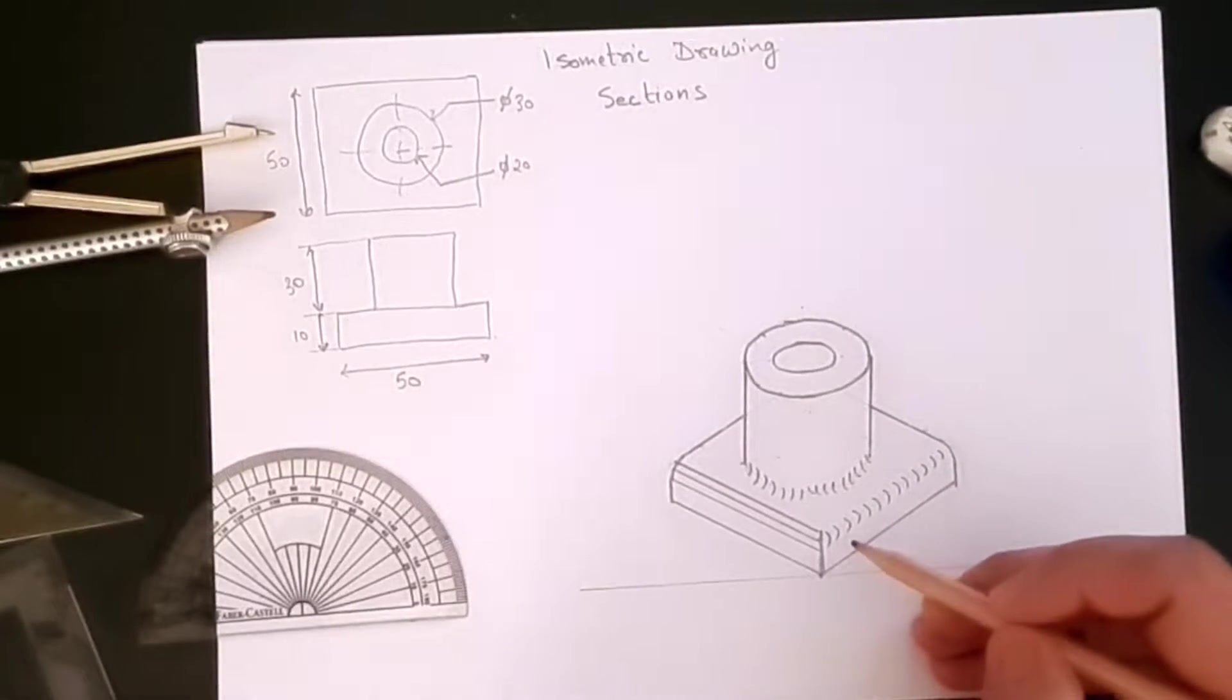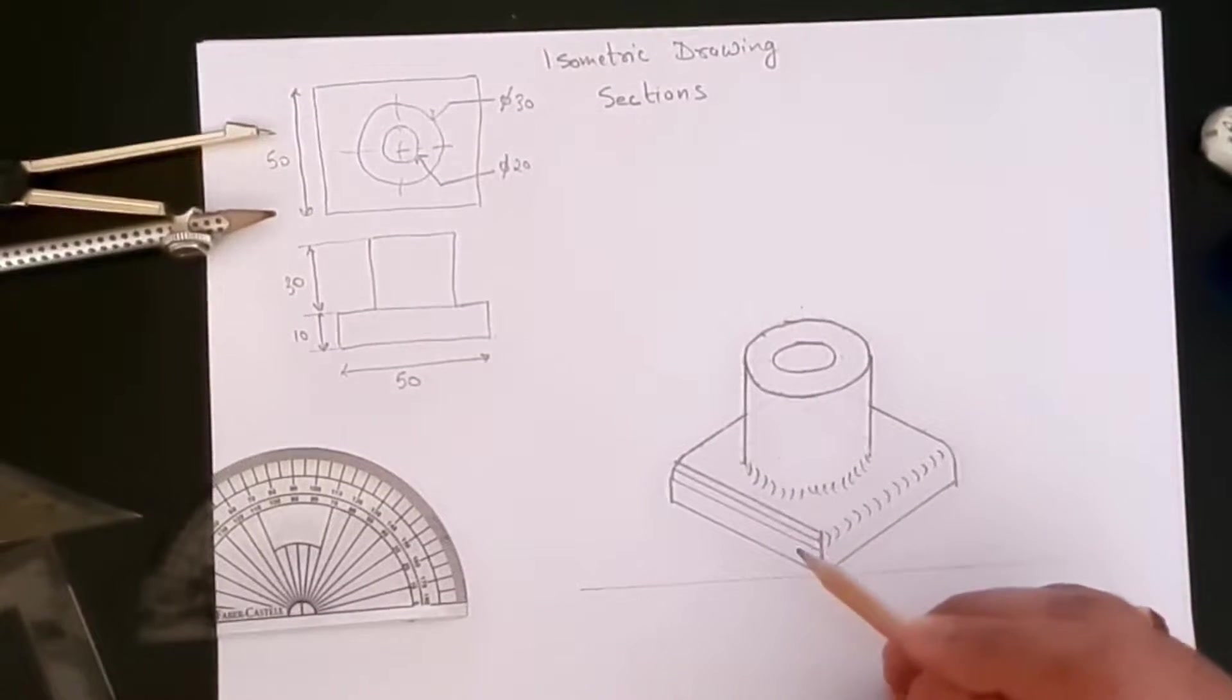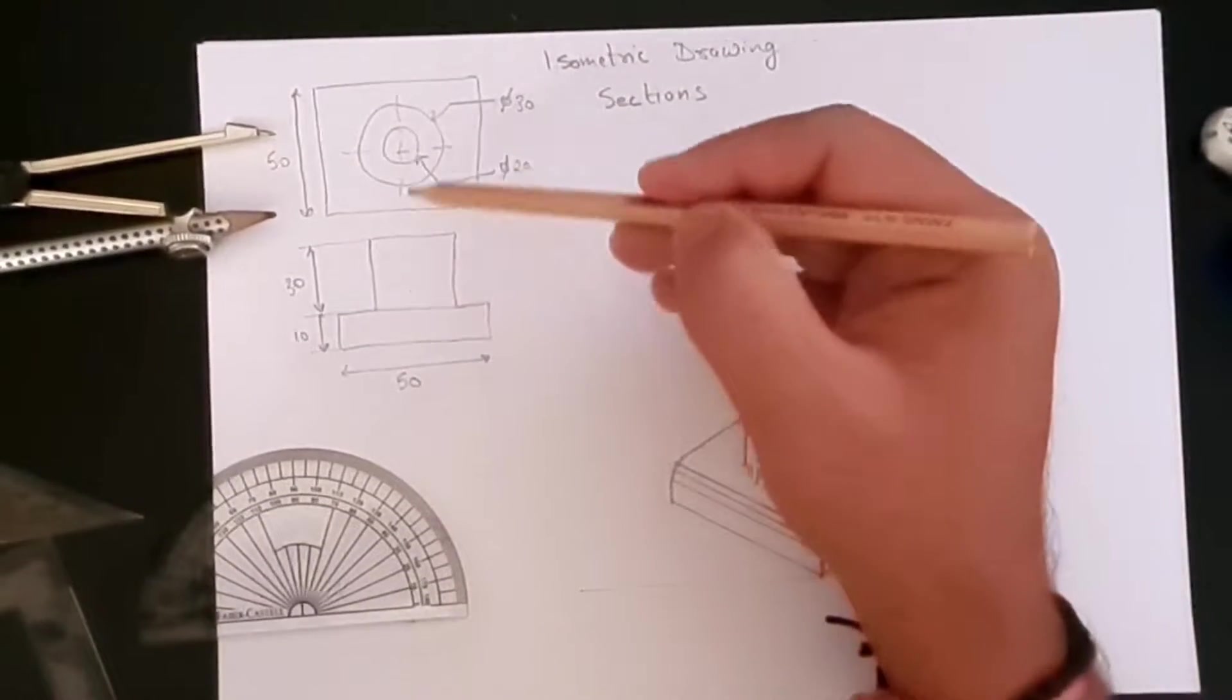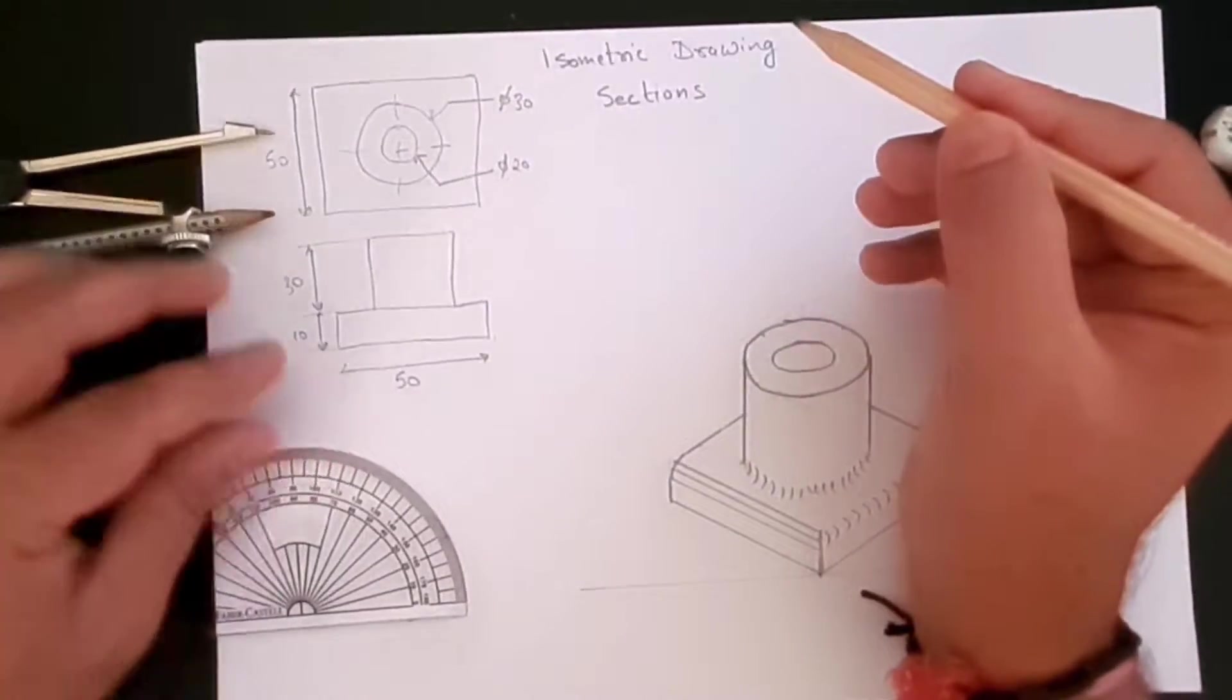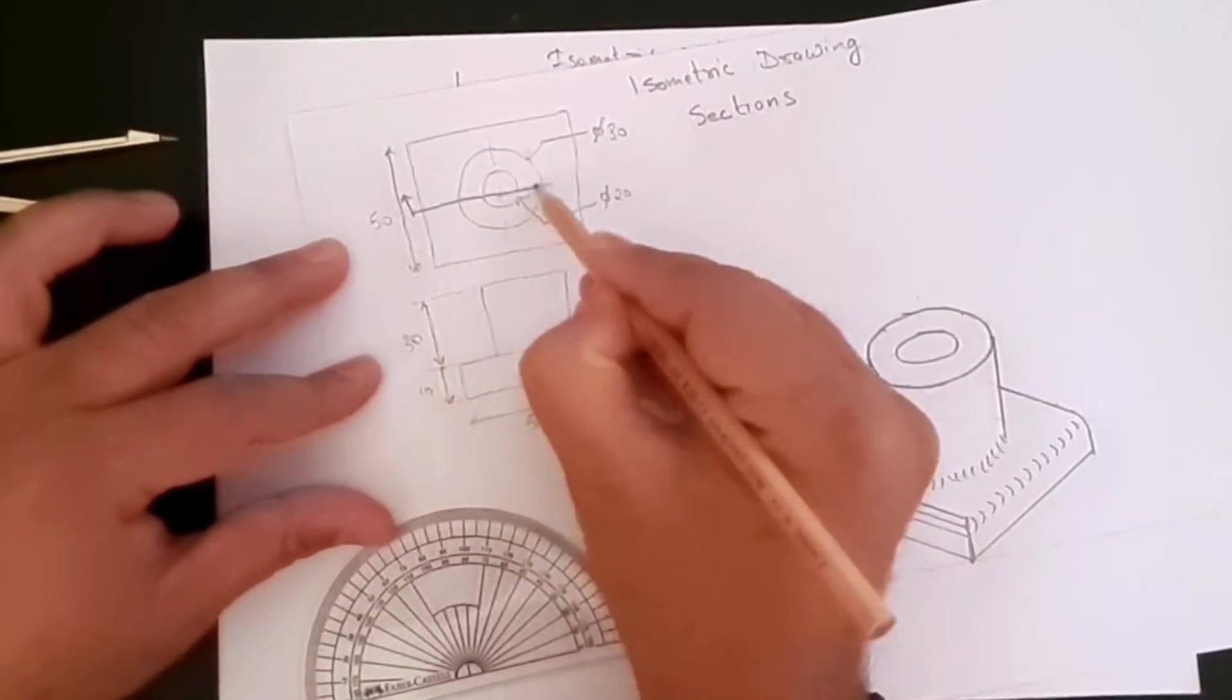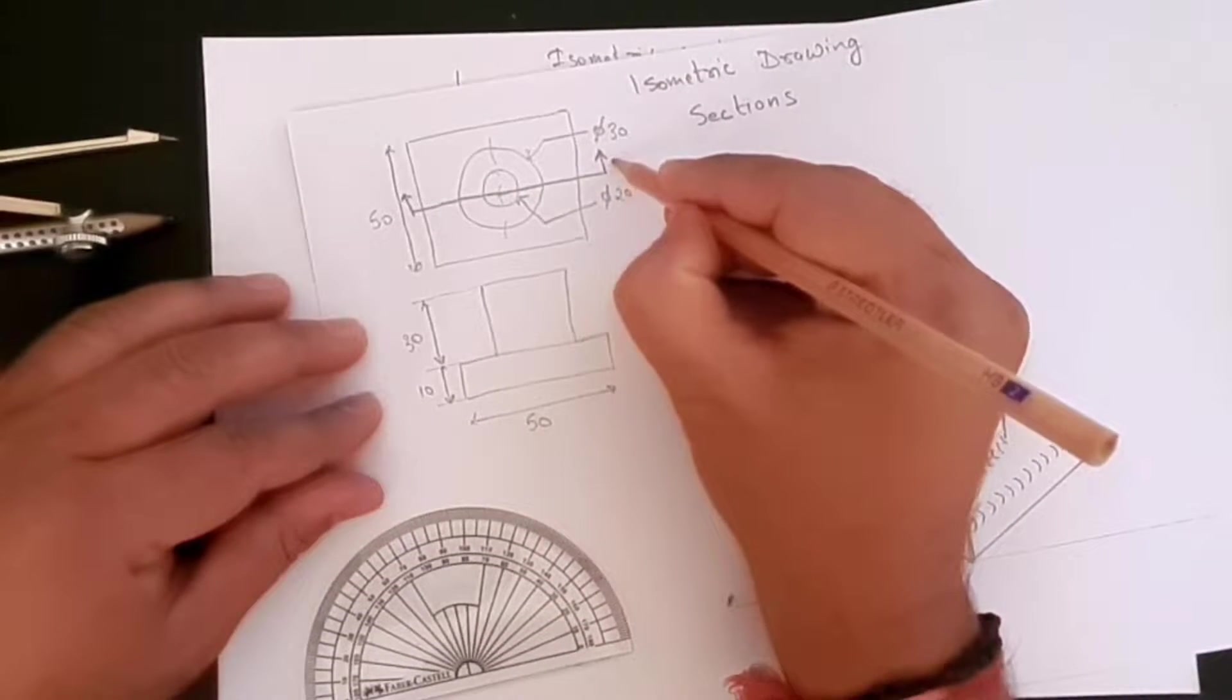In the previous video we had created this isometric drawing out of the two orthographic views that we had. Now let's say a requirement is that we need to cut or make a section of this part just to show what's on the inside.